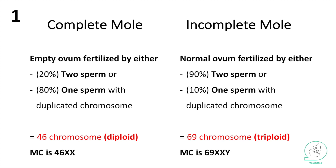Here is a summary slide comparing both complete and incomplete mole. In the complete mole, an empty ovum is fertilized by either two sperms or most commonly one sperm with 46 chromosomes, ending up with 46 chromosomes — diploid — and the most common sex genotype is 46 XX. In the incomplete mole, a normal ovum is fertilized most commonly by two sperms or one sperm, giving 69 chromosomes — triploid — and the most common sex genotype is XXY.